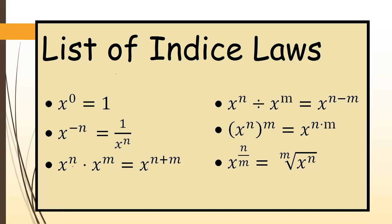Next rule: x to the power n times x to the power m equals x to the power n plus m. For example, 2 to the power 2 times 2 to the power 5 equals 2 to the power 7. Another example: 4 to the power negative 2 times 4 to the power 7 equals 4 to the power 5, because negative 2 plus 7 equals 5.